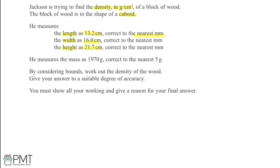He then measures the mass as 1970 grams correct to the nearest five grams. We're asked to, by considering bounds, work out the density of the wood, giving our answer to a suitable degree of accuracy. We must show our working and give a reason for the final answer we come to.